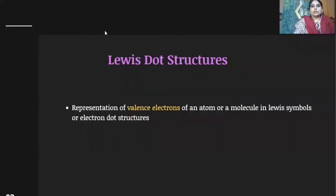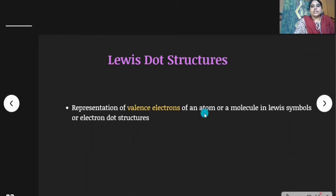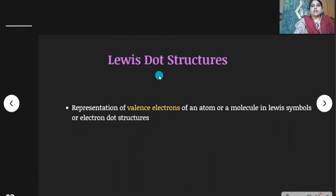Next, Lewis dot structures. In bond formation, inner core electrons are not affected — only valence electrons are affected. The representation of valence electrons of an atom or molecule using Lewis symbols or electron dot structures is called Lewis dot structures.